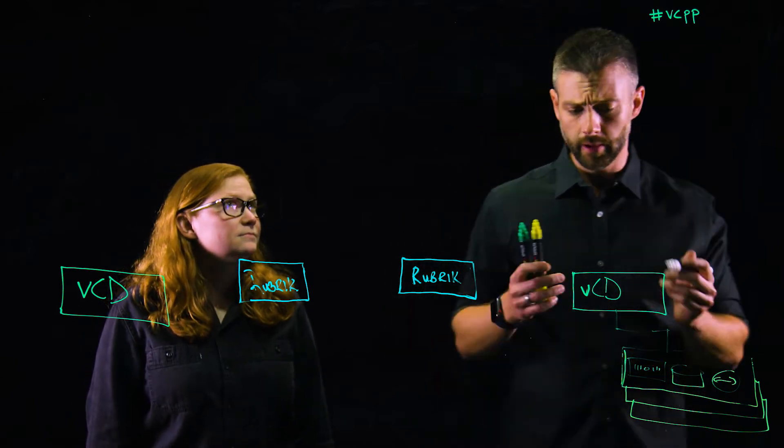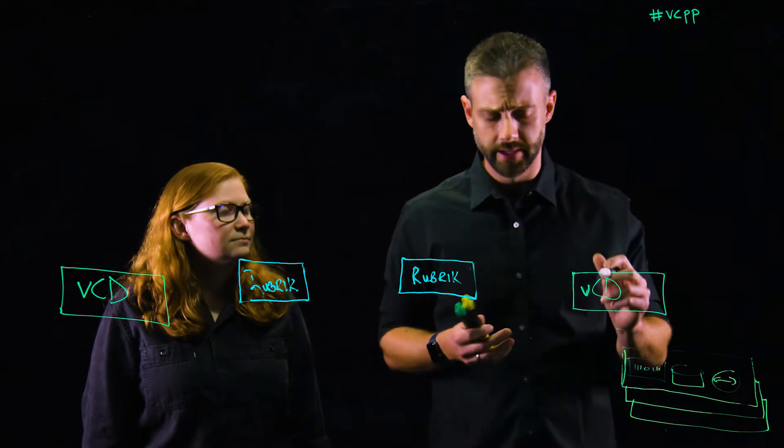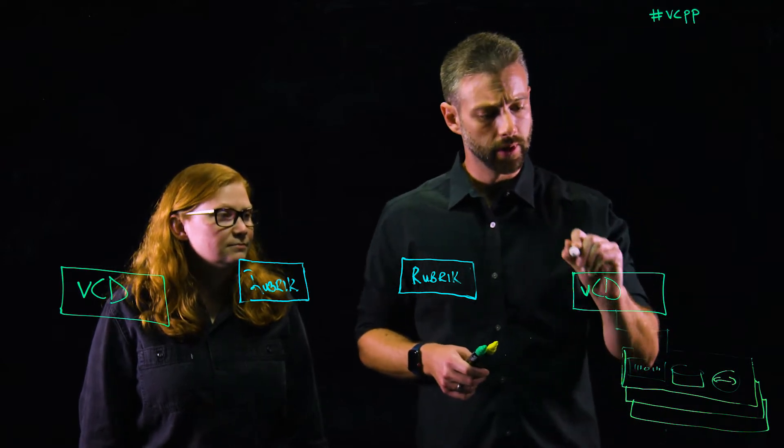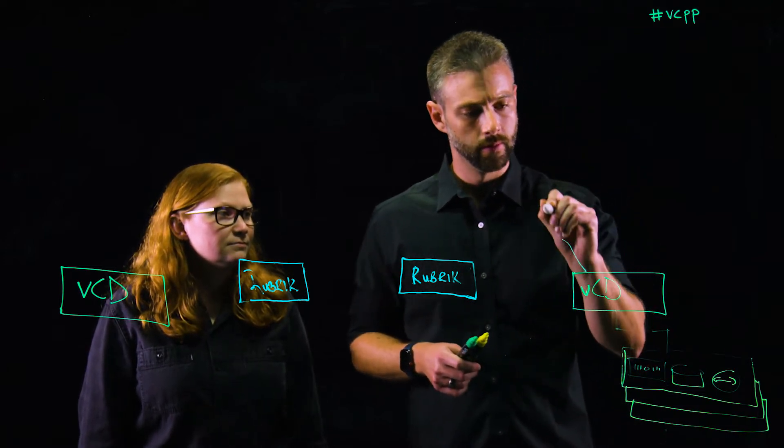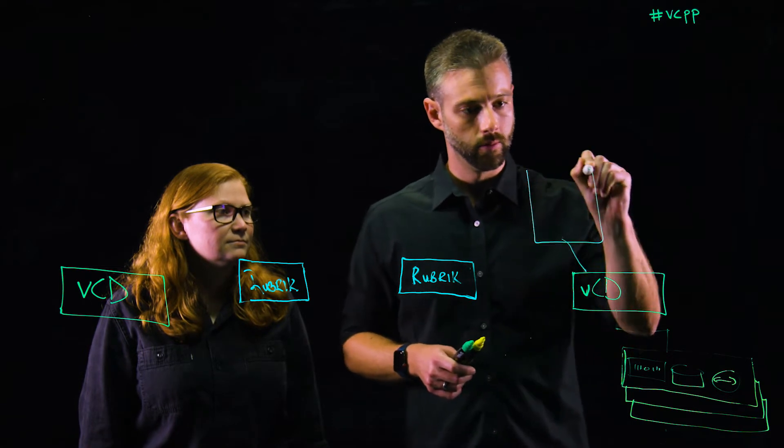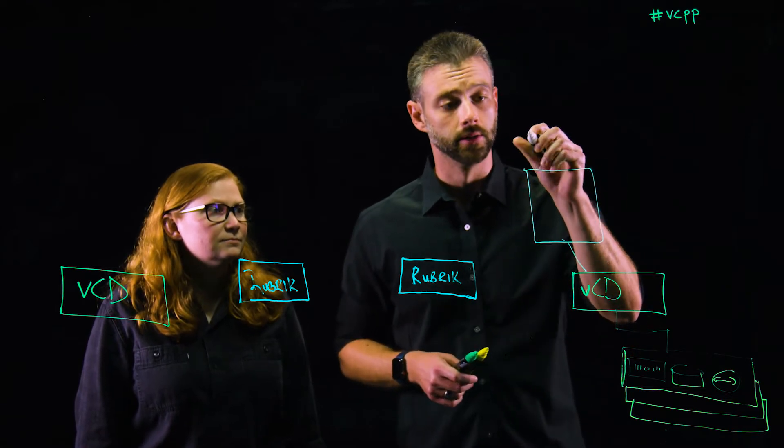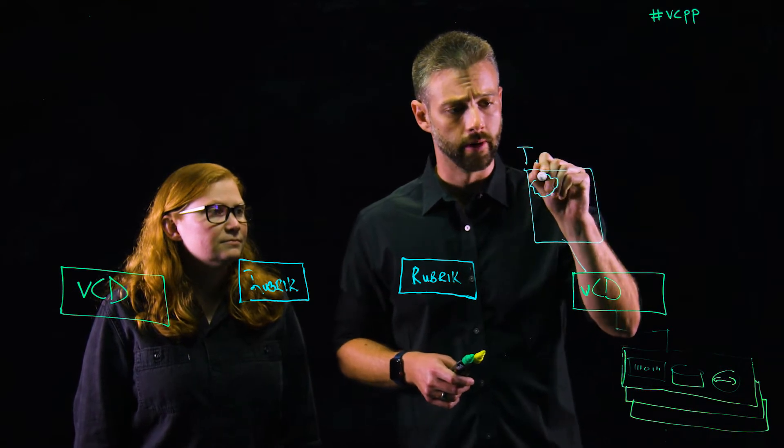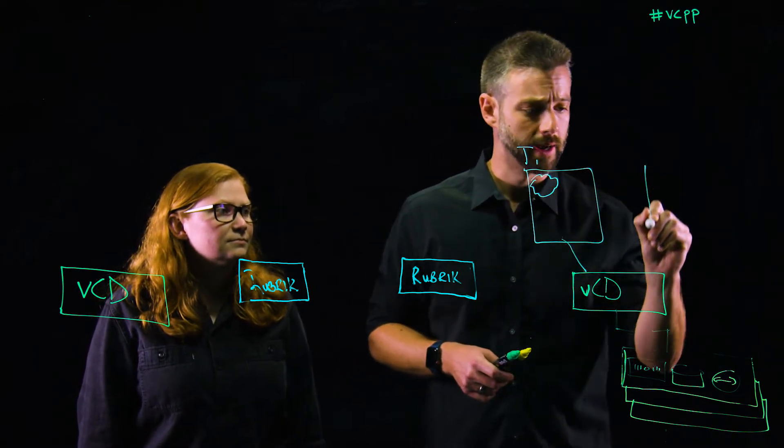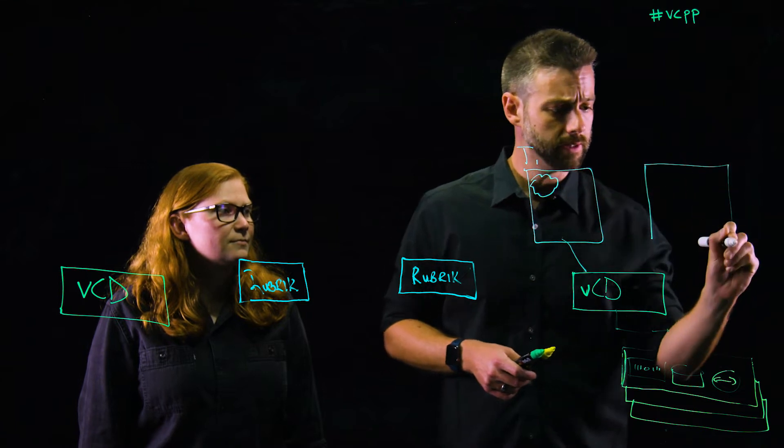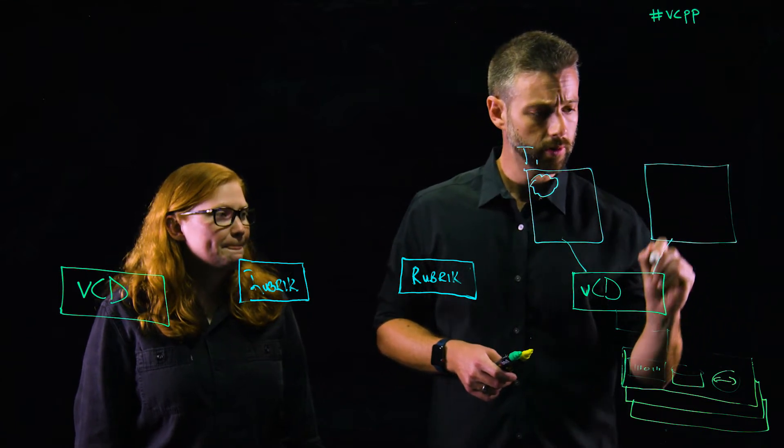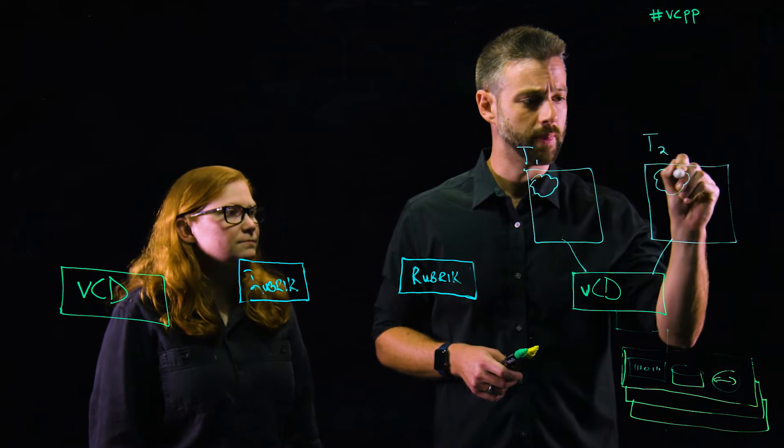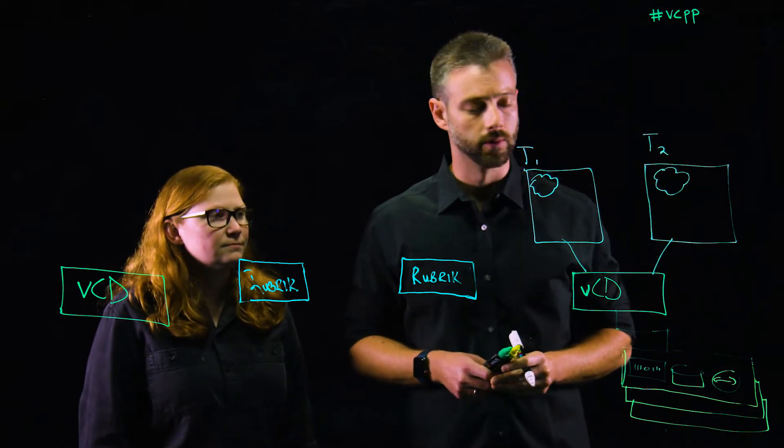Now, what happens on the front end is we create organizations or tenants. So when we create a tenant, we expose organization VDC. So let me go ahead and draw out tenant one, and we'll draw out a little cloud for their respective organization VDC. And then we'll have tenant two that also has its own respective carve-out of the resources.